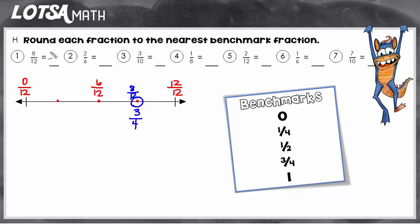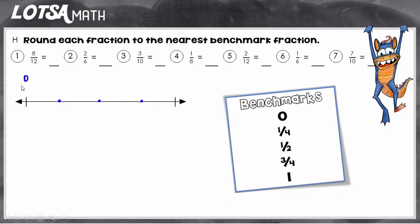So eight-twelfths would round to three-fourths. Now let's do number two. On number two, they're in sixths, so this number line is going to represent six parts. Here would be the middle, and then the fourths are right there. So at the beginning would be zero-sixths, and at the end would be six-sixths, and right in the middle would be three-sixths. Now I'm going to use that knowledge to help me place two-sixths. Two-sixths looks like it would be about — if there's zero and there's three, then two would be somewhere around right here. And now I just have to see which benchmark fraction that's closest to. Since it's closest to this dot, and that dot represents one-fourth, two-sixths would be closest to one-fourth.